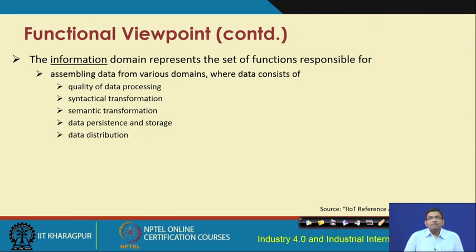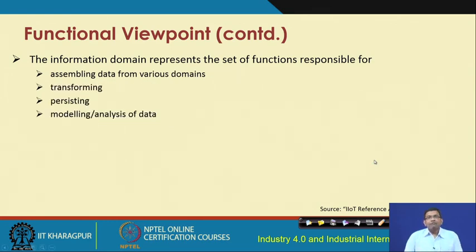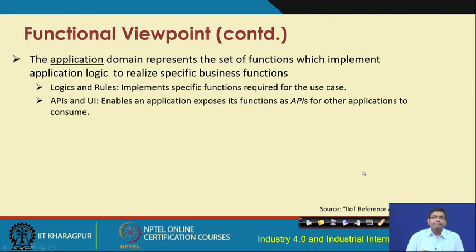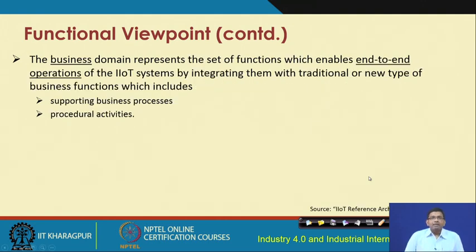The information domain represents the set of functions responsible for assembling data from various domains, transforming the data, persisting it in the system, and modeling and analyzing it. The application domain represents the set of functions that implement the application logic to realize specific business functions — including logics and rules, APIs, and UIs. The business domain represents the set of functions that enable end-to-end operations of the IIoT system by integrating them with traditional or new business functions, including supporting business processes and procedural activities.